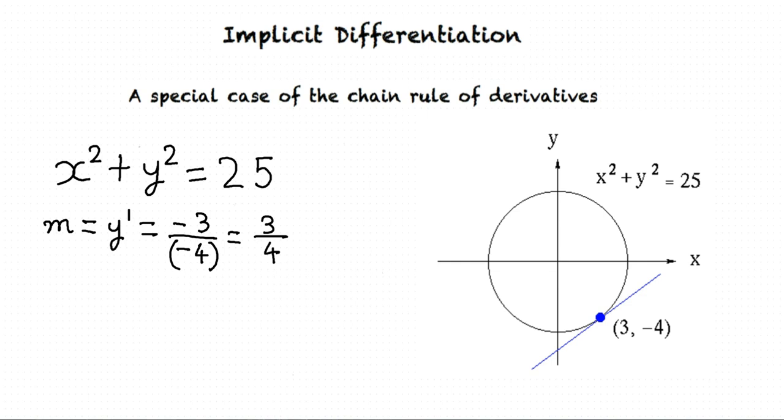Okay, I understand the concept now. Implicit differentiation is differentiating an implicitly defined function using the chain rule. Yes, that is right.